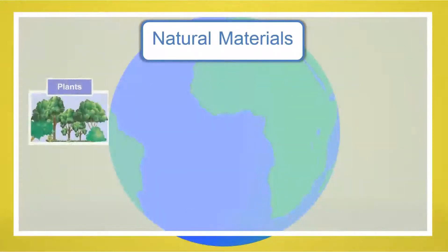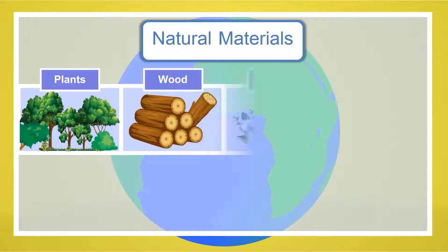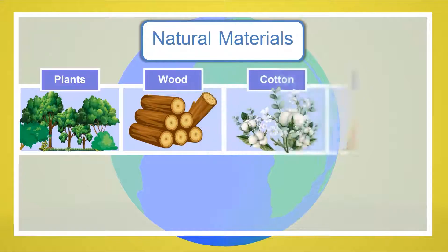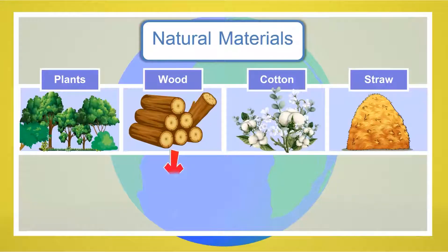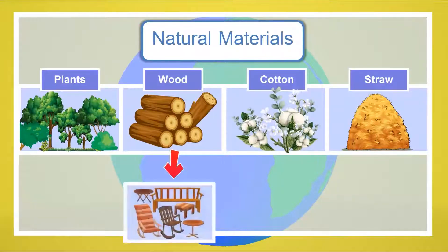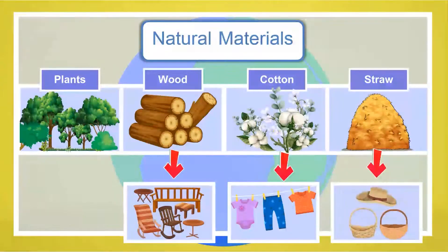Plants provide us with natural materials such as wood, cotton, and straw. And we use these natural materials from plants in order to make many different things. We use wood to make furniture, we use cotton to make clothing, and we use straw to make hats and baskets.